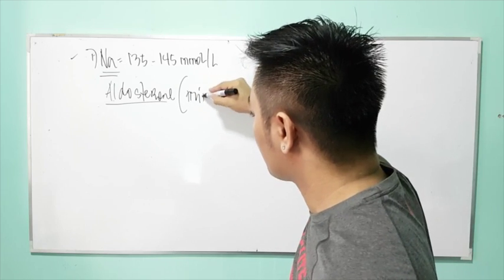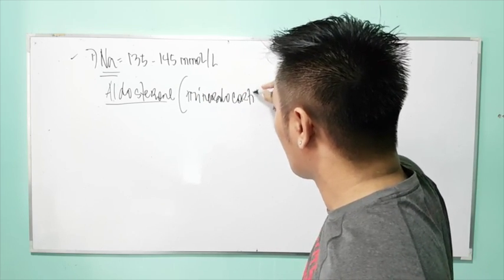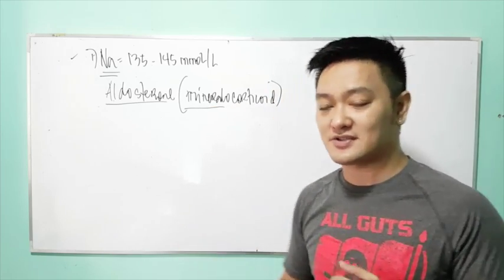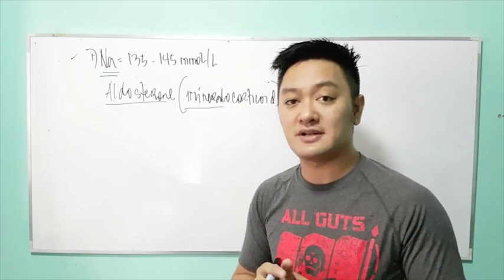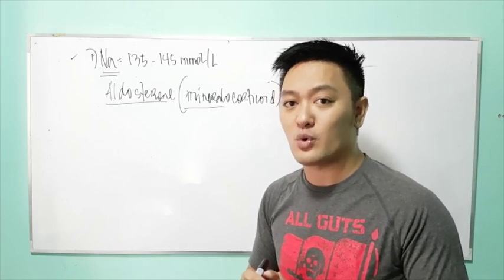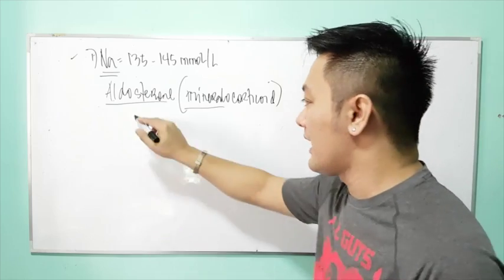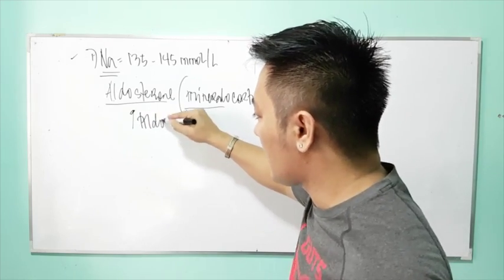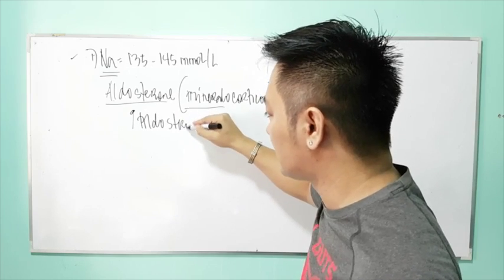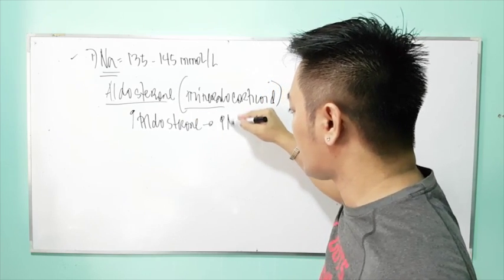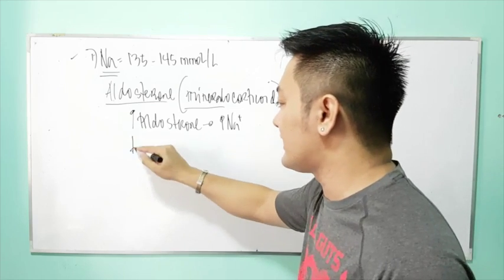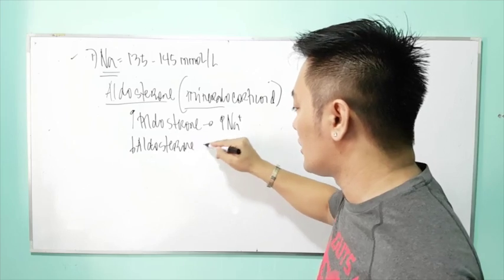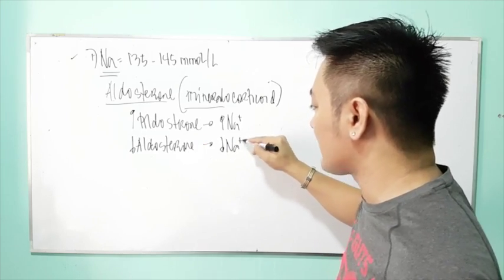Aldosterone is produced by the adrenal gland, particularly the adrenal cortex. Remember: an increase in aldosterone results in hypernatremia, and a decrease in aldosterone results in hyponatremia. Do not forget this relationship.